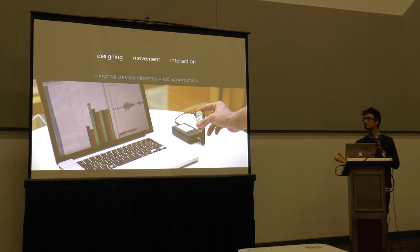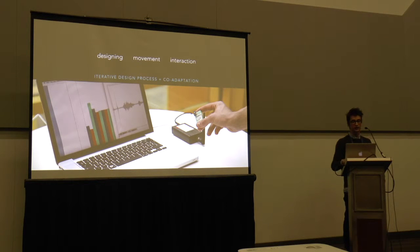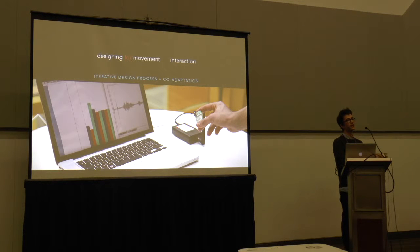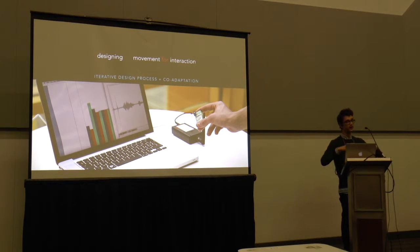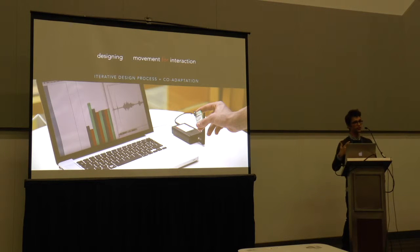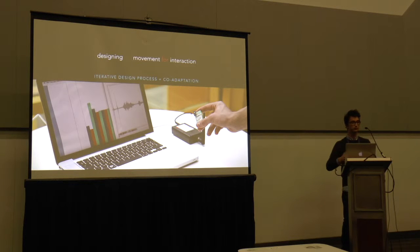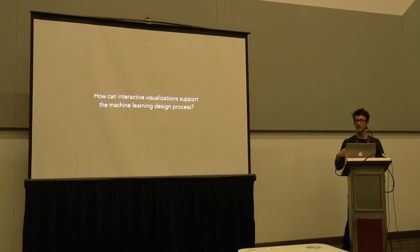What's happening is we're interested in designing movement interaction, and in doing this there is a very interesting iterative design process. We want to build a system that responds to movement, and when we do this we eventually design movement for interaction. There is always this interplay of creating a first set of gestures, having a first system — and most likely it doesn't work. So we need to reflect on our gesture design, maybe adjust the model, and iterate. There is co-adaptation: the machine learns from the user and the user learns how to deal with machine learning.